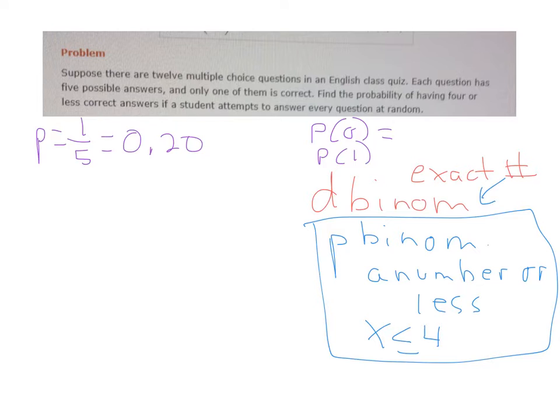So that's why we would choose the p-binom function rather than the d-binom function. If it says what's the probability of getting exactly six or something, we would use the d-binom function.